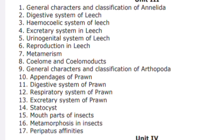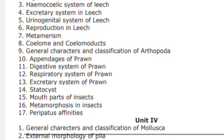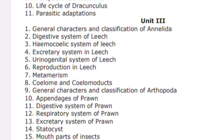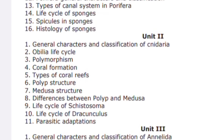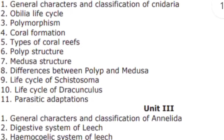There are only four units total in zoology, so try to learn all the questions. From unit number four, the topics include general characters and classification of Mollusca, external morphology of Pila, pearl formation, and torsion. I will upload all these questions in the Telegram group — try to learn all of them as they are all important.